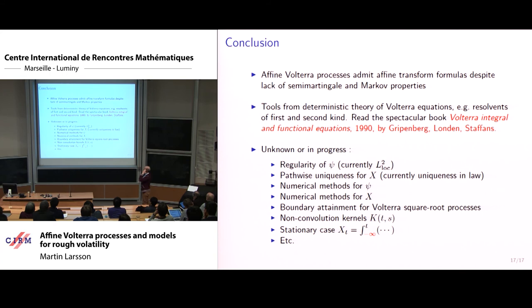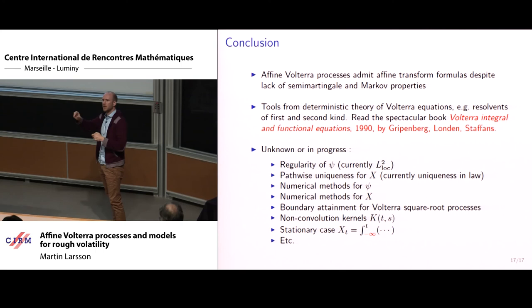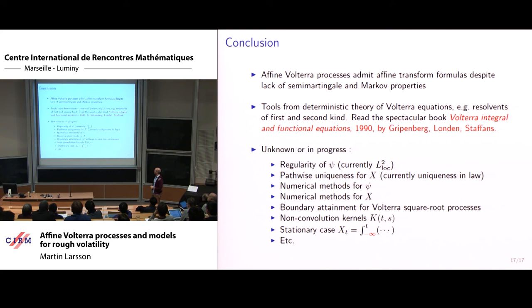So that's what I wanted to show. What we're showing here is that we get these types of nice, rather explicit expressions, even though we don't have any semi-martingale or Markov structure. Another message that I want to convey here is that a lot of what we do relies on basic tools from stochastic analysis, plus classical techniques from the theory of Volterra integral equations, deterministic Volterra equations. There's a book here by Gripenberg, Londen, Staffans from 1990 that is very nice. Encyclopedia has everything. This is really a great book. But there's a lot of things we don't know, so regularity of the solutions of Volterra equations, the Riccati equations, pathwise uniqueness, we have no idea, numerical methods, boundary behavior is also something. Now of course, we'd like to look at non-convolution kernels, that's also something. Stationary case, we integrate from minus infinity, and so on. So I'll stop here. Thank you very much for listening.